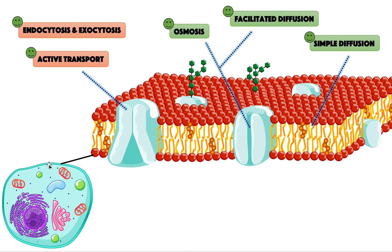There are many ways things can get in and out of the cell. Just like humans can travel by walking, running, ship, boat, or flying, molecules can move in and out of cells through different ways: simple diffusion, facilitated diffusion, osmosis, endocytosis, exocytosis, and active transport. I've made separate videos on all of them except this last one — endocytosis and exocytosis.